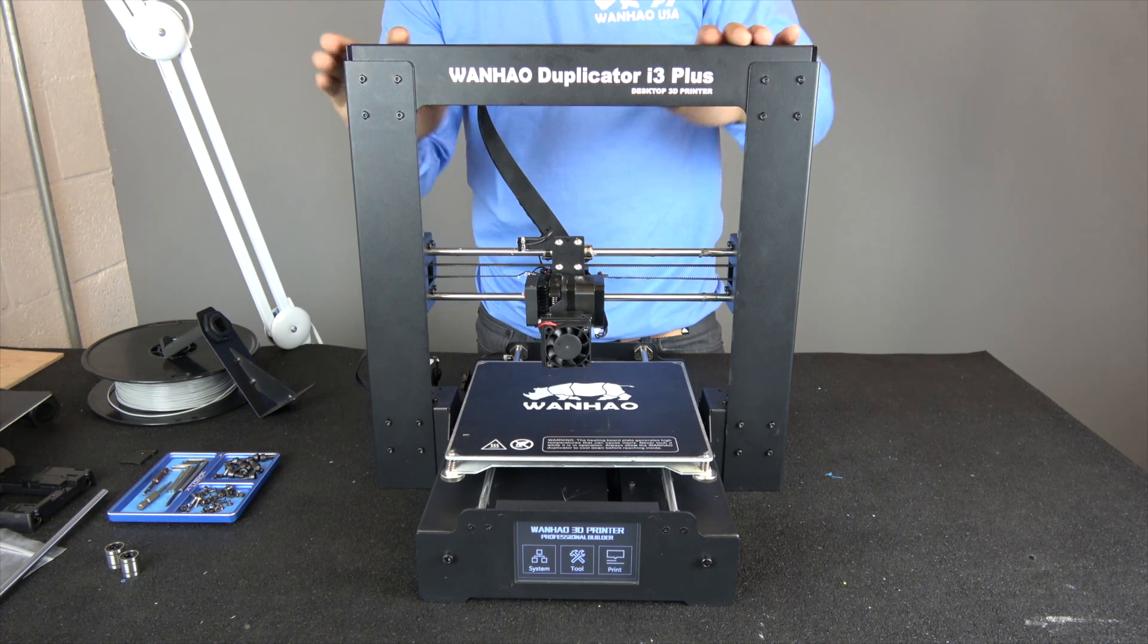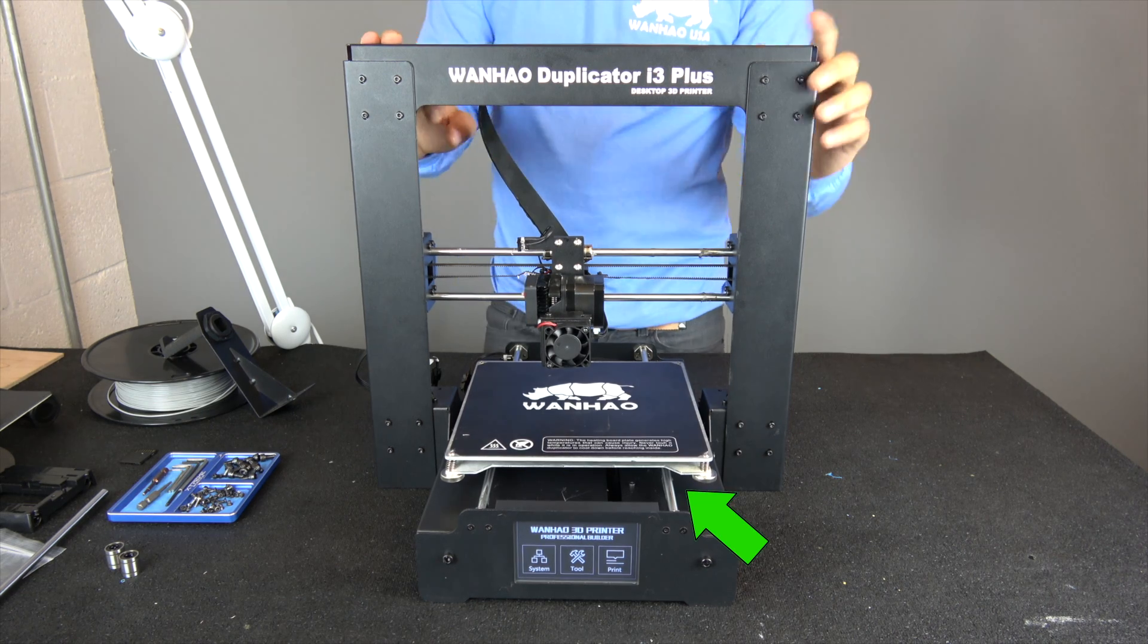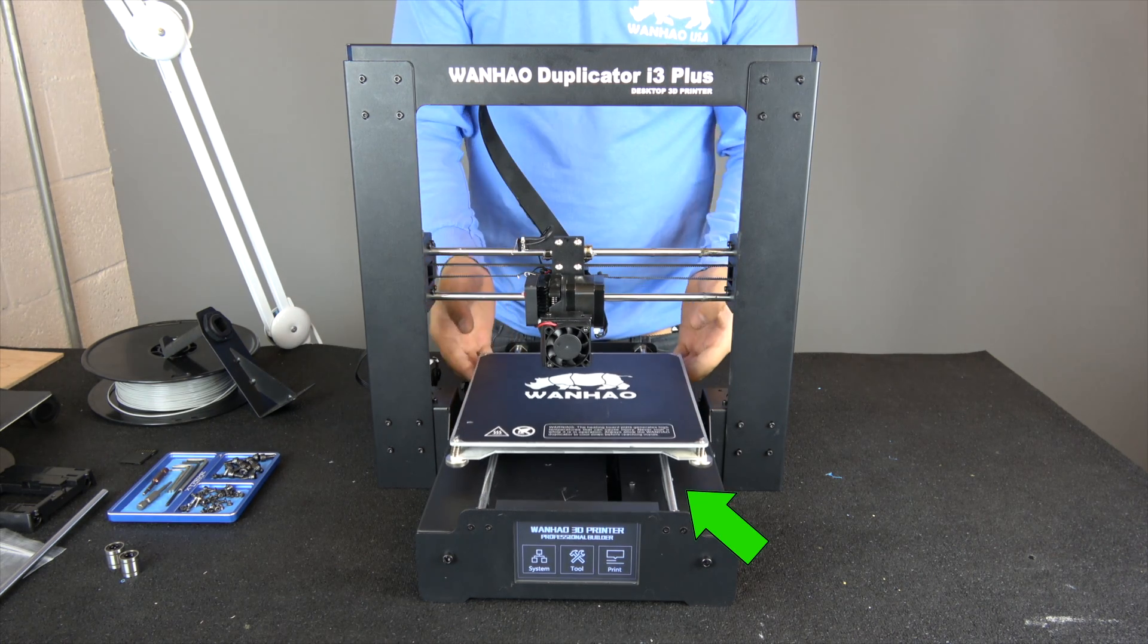In this video, we will be working on our Duplicator i3 Plus by replacing our bed bearings which are located directly underneath the aluminum bed plate.